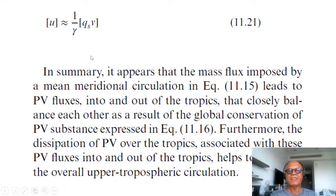In summary, it appears that the mass flux imposed by a mean meridional zonal circulation that we looked at leads to PV fluxes into and out of the tropics that closely balance each other as a result of the global conservation of PVS or PV substance that we looked at.